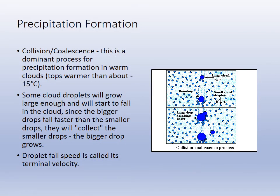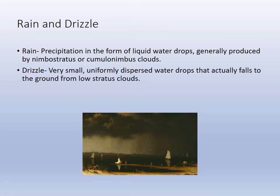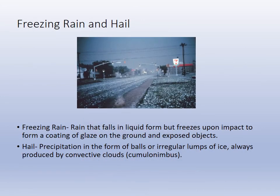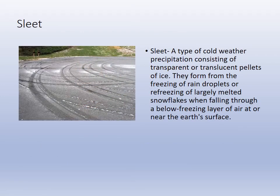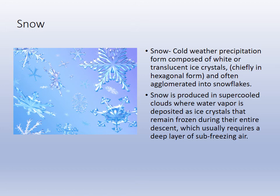Rain forms from the collision and coalescence of tiny droplets, which then fall to earth. Rain and drizzle are common types of precipitation. Freezing rain occurs as drops fall through a colder layer of the atmosphere and freeze. Hail forms as a raindrop falls, gets pushed back up by rising air and freezes, then falls again and is pushed back up repeatedly, growing into a ball of ice — associated with strong thunderstorms because of the updraft. Sleet is another type of freezing precipitation, and snow is yet another form.